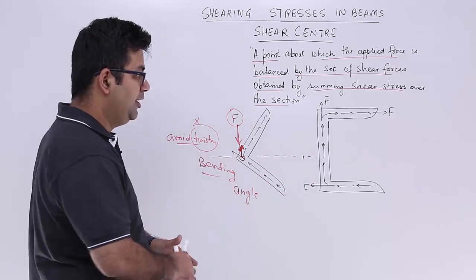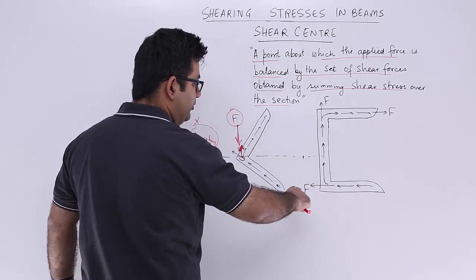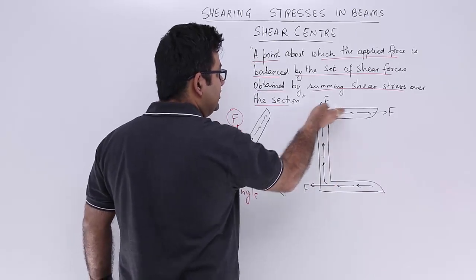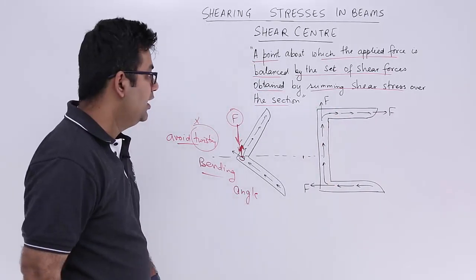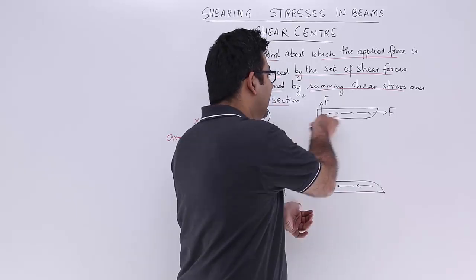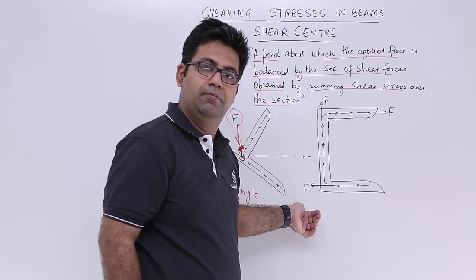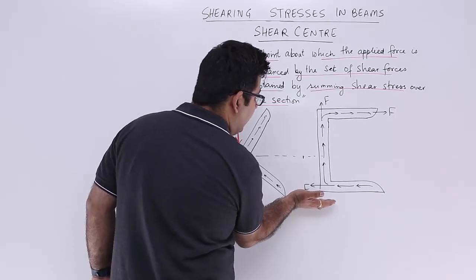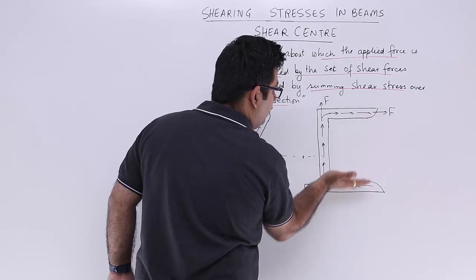Now if you look at this channel section, you can see the distribution of shear stresses in this leg, this leg, and the upper leg. This force F and that force F are balanced - they are in equilibrium, so there is no resultant for these two forces.